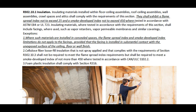R302.10.1 Insulation. Insulating materials installed with floor-ceiling assemblies, roof-ceiling assemblies, wall assemblies, crawl spaces, and attics shall comply with the requirements of this section. They shall exhibit a flame spread index not to exceed 25 and a smoke developed index not to exceed 450, where tested in accordance with ASTM E84 or UL723. Insulating materials where tested in accordance with the requirements of this section shall include facings where used, such as vapor retarders, vapor permeable membranes, and similar coverings. Exception: Where such materials are installed in concealed spaces, the flame spread index and smoke developed index limitations do not apply to the facings, provided that the facing is installed in substantial contact with the unexposed surface of the ceiling, floor, or wall finish.